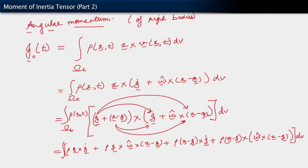In the case of the very first term, observe that g and ġ are not functions of position — only ρ is a function of position — but ρ when integrated over dV gives us the mass. So this first term when we carry out the integral is going to give us m·g cross ġ.